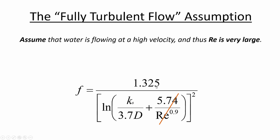So rather than starting with an F value of say 0.008, we get a better first guess by assuming fully turbulent flow and calculating F based on just the k_s/D term — that's 1.325 divided by the natural log of that term, squared. We ignore the Reynolds number part as our initial guess, and then once we have that guess and go through the iteration process, we'll have a flow velocity to put into the Reynolds number for subsequent iterations.